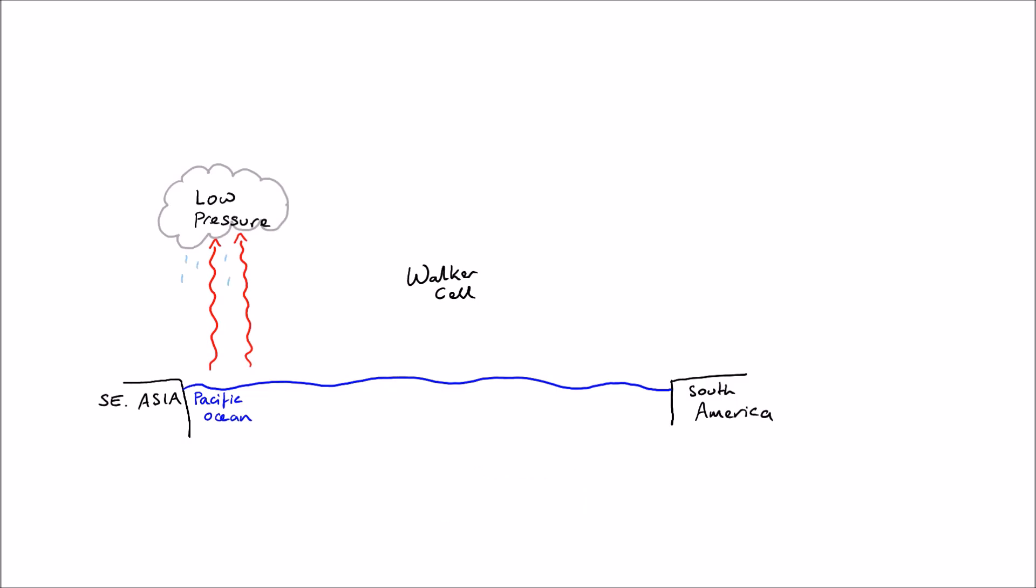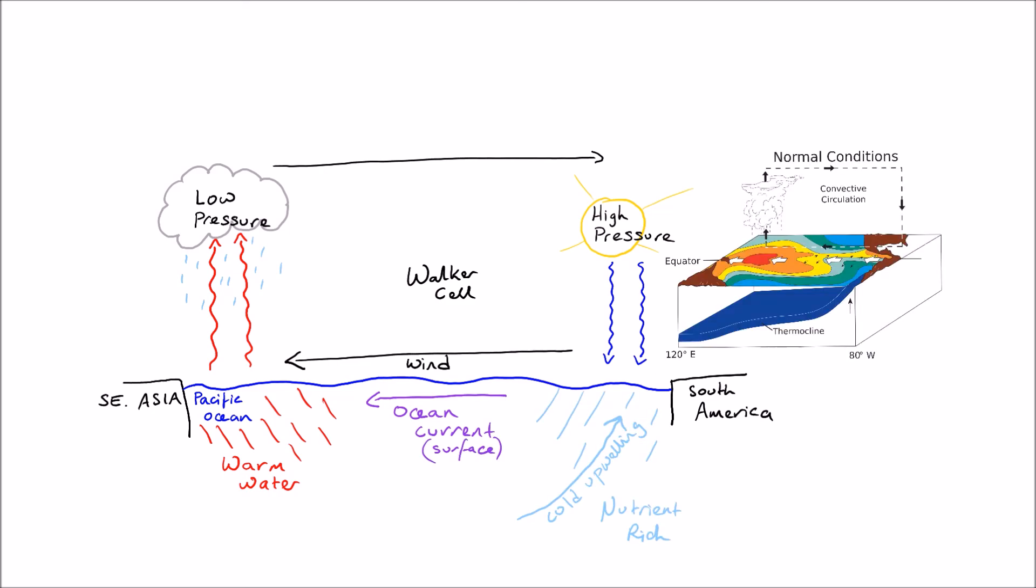You start with the Walker Cell. You have the low pressure forming over Southeast Asia. You have the high pressure forming over South America and you obviously connect the two with the wind that is going to be blowing from high pressure to low pressure. That is going to cause the warm water to pool in Southeast Asia and the cold upwelling to occur in the South American coast.